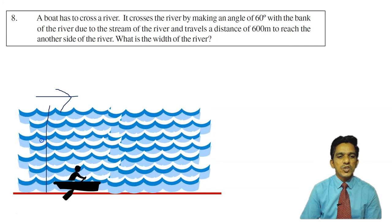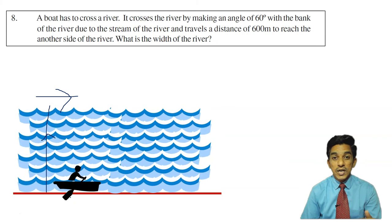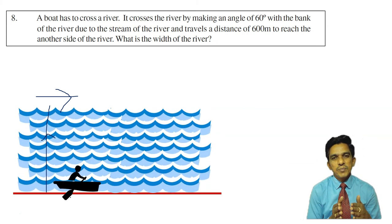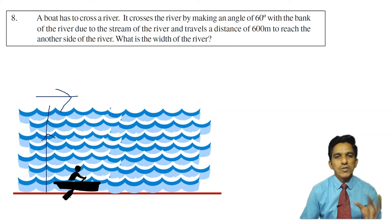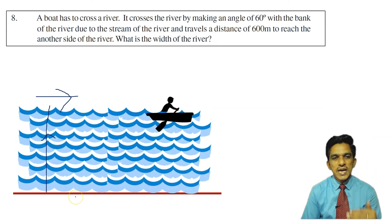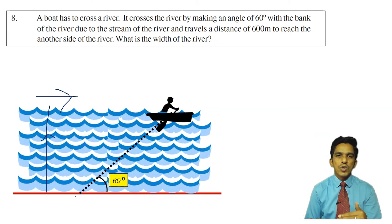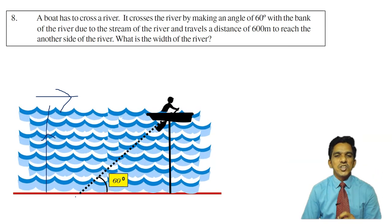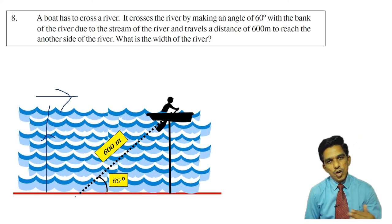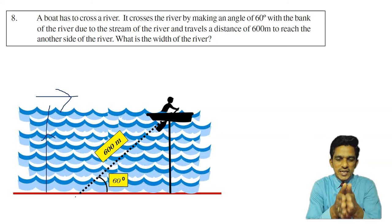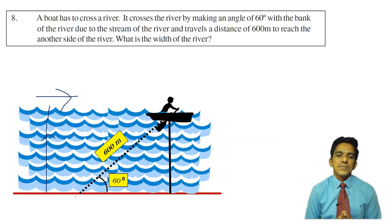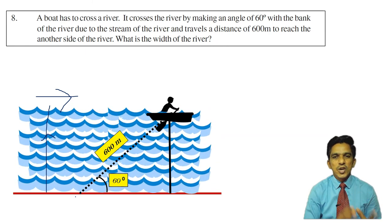This person wants to travel from one side to the other side. Straight travel is not possible because water is flowing and the current pushes the boat. He reached the other bank by making 60 degrees with the bank of the river. The boat has traveled 600 meters. You have to find the width of the river. Let us draw the diagram.